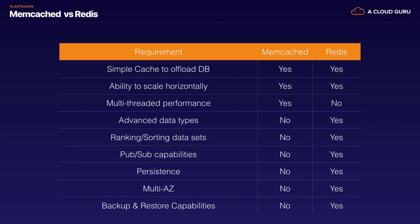If, however, you're going to need things like advanced data types, if you're going to need ranking and sorting data, if you're going to need pub/sub — publishing and subscribing capabilities — if you need multiple availability zones or persistence, or you need the ability to do backup and restores, then you're going to use Redis. So if you want multi-AZ, backups and restores, and more advanced data types, then you're going to use Redis. If you just want something simple and easy to get started with, then you want Memcached.